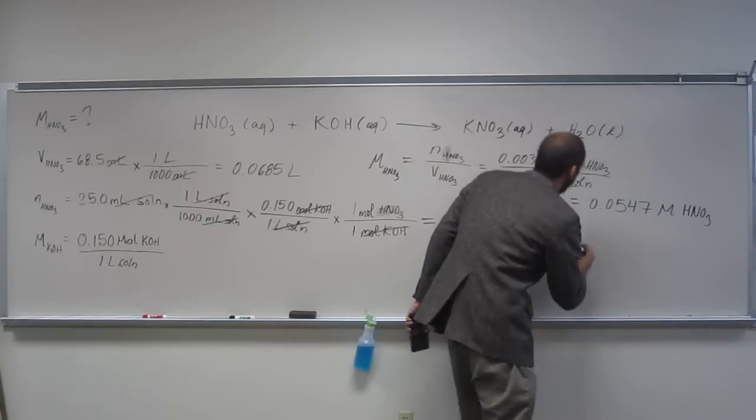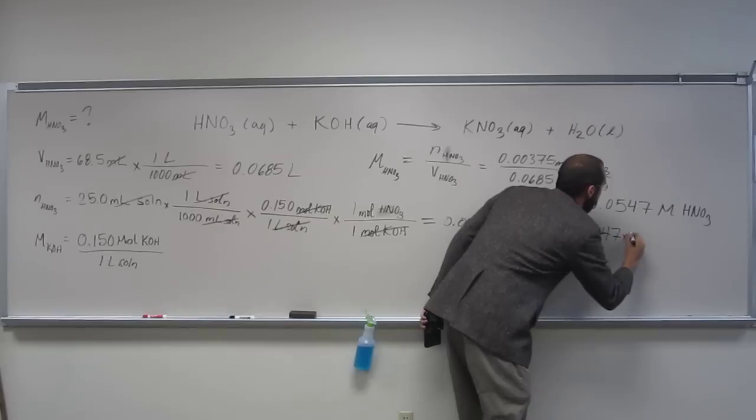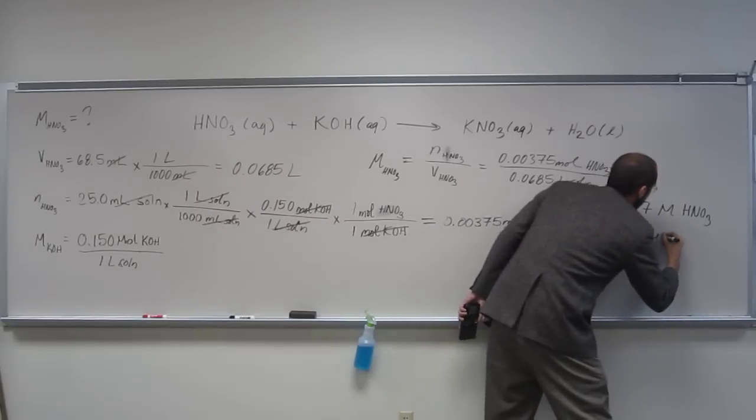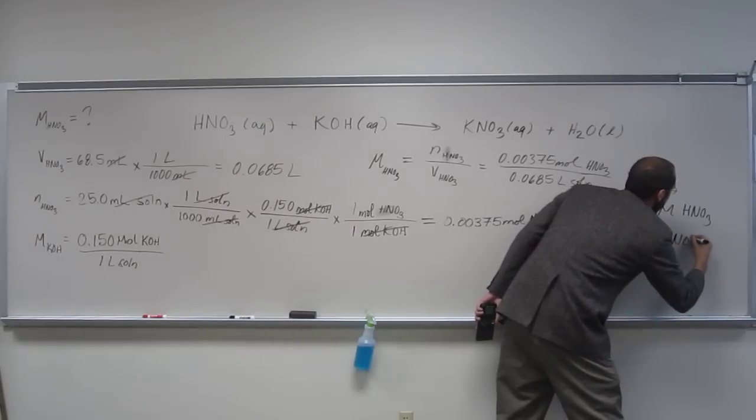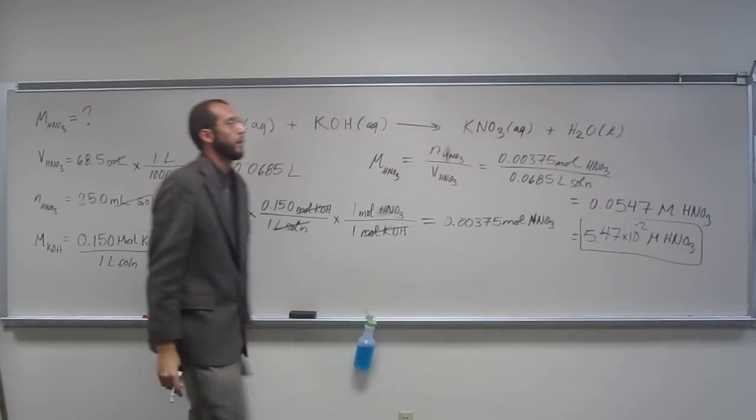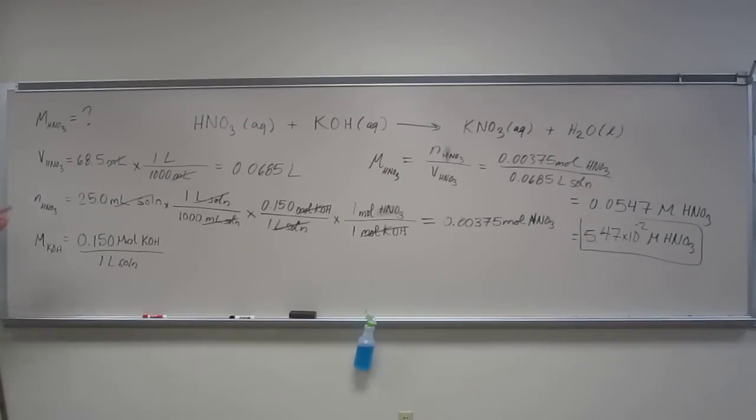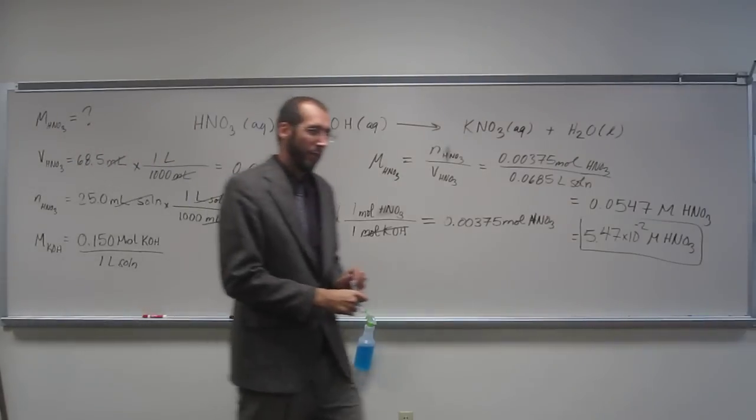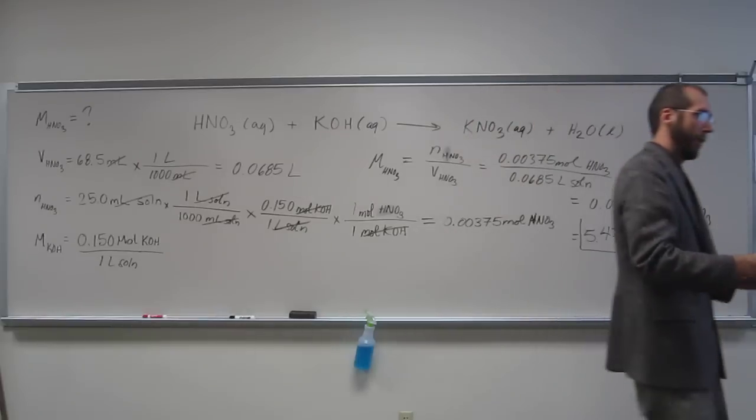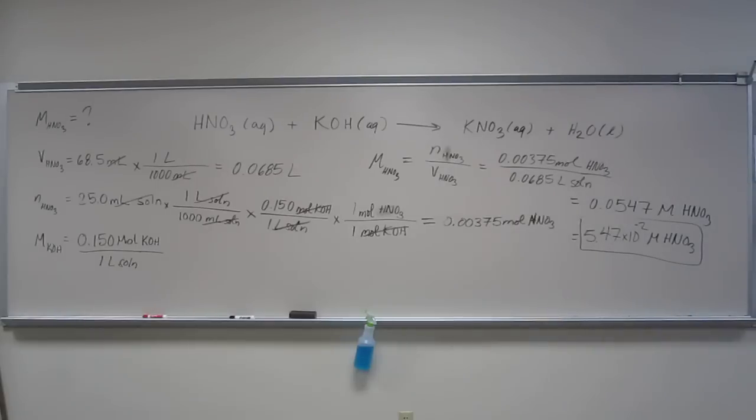So you can leave it like that, or of course you can put 5.47 times 10 to the negative 2 molar HNO3. That seems like a reasonable molarity to me. Is everybody okay with how we did that? Remember, step, step, step, step. If you're not doing every step and converting a unit, or if you're putting no units in there, you're probably getting confused and not understanding why we're doing it. Okay, are there any questions about this before I kill it?